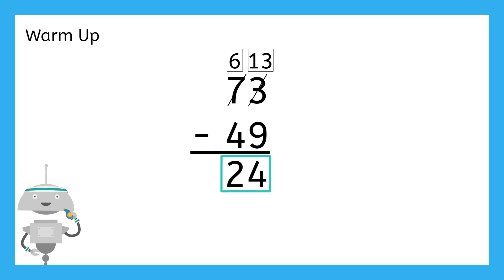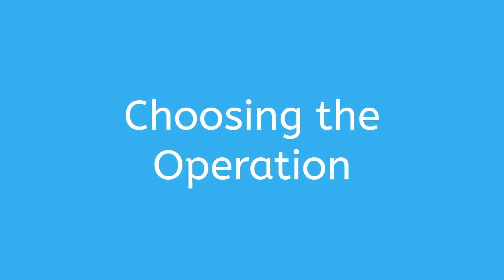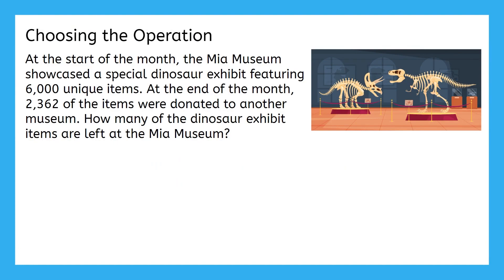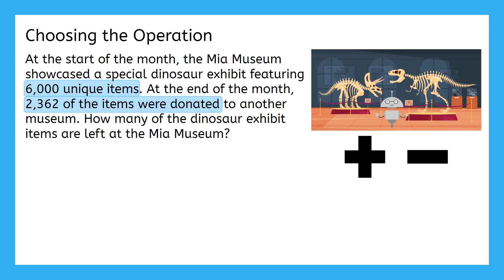Now that we're all warmed up, let's jump into some practice problems. For our first problem, we'll have to choose which operation makes the most sense to help us solve. At the start of the month, the MIA Museum showcased a special dinosaur exhibit featuring 6,000 unique items. At the end of the month, 2,362 of the items were donated to another museum. How many of the dinosaur exhibit items are left at the MIA Museum? We know there were 6,000 items at the start, and then 2,362 were donated, so they're not at the MIA Museum anymore. Usually, when a problem asks how many things are left, we'll need to subtract. So let's set up our equation.